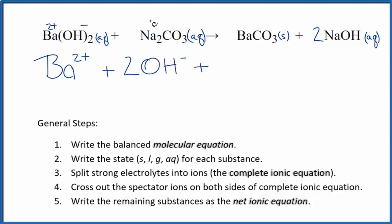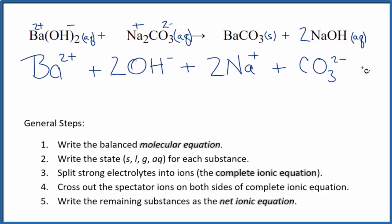Sodium is in group one. It has a 1+ ionic charge. The whole carbonate, 2-. That's a good one to remember. Two sodium ions, and then we have just the one carbonate ion here. So these are the reactants in our net ionic equation.